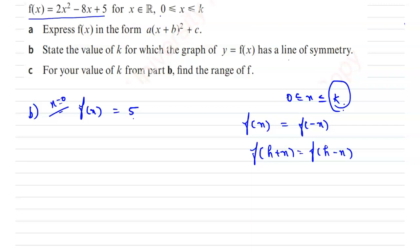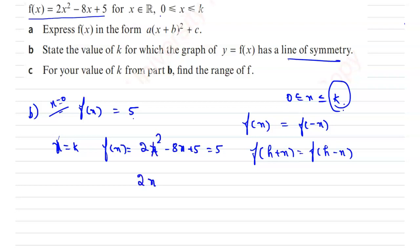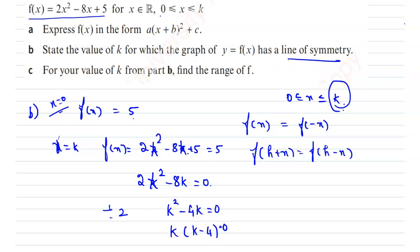Now take x equal to k. So f(k) equals 2k squared minus 8k plus 5, which must equal 5 to get the line of symmetry. This gives 2k squared minus 8k plus 5 equal to 5, so 2k squared minus 8k equal to 0. Dividing by 2, we get k squared minus 4k equal to 0.